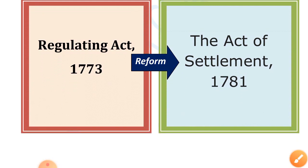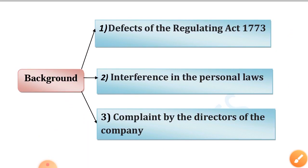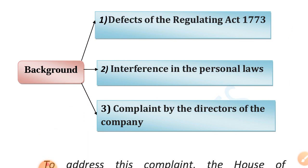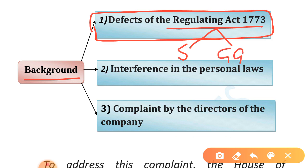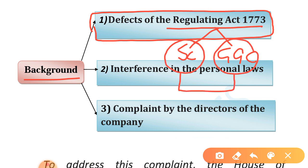See the background of this Act. First, the defects of the Regulating Act 1773. One of the biggest problems created by the Regulating Act was the tussle between the Supreme Court and the Governor General in Council. The biggest defect of the Regulating Act was that the powers of the Supreme Court and the Governor General were not clearly defined, causing them to interfere in each other's jurisdiction.